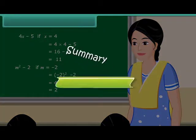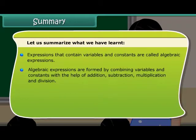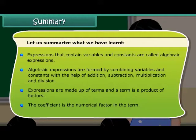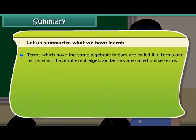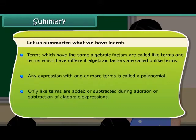Summary. Let us summarize what we have learned. Expressions that contain variables and constants are called algebraic expressions. Algebraic expressions are formed by combining variables and constants with the help of addition, subtraction, multiplication and division. Expressions are made up of terms, and a term is a product of factors. The coefficient is the numerical factor in the term. Terms which have the same algebraic factors are called like terms, and terms which have different algebraic factors are called unlike terms. Any expression with one or more terms is called a polynomial. Only like terms are added or subtracted during addition or subtraction of algebraic expressions. Thank you.